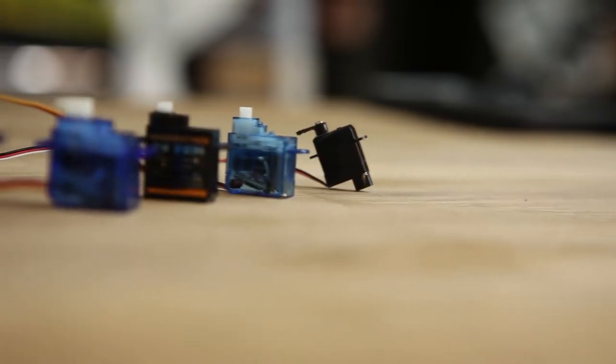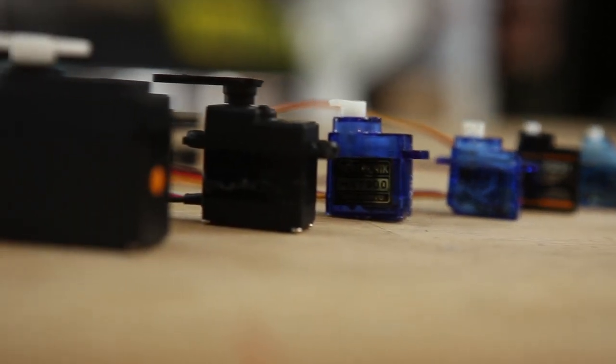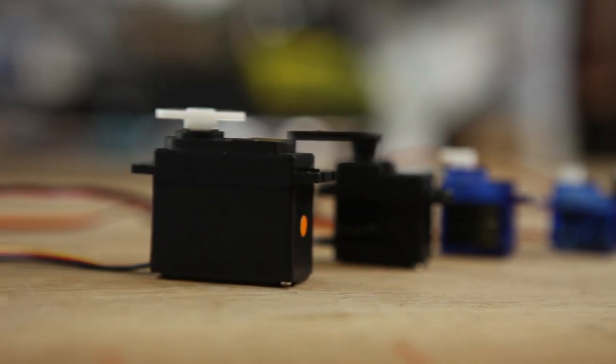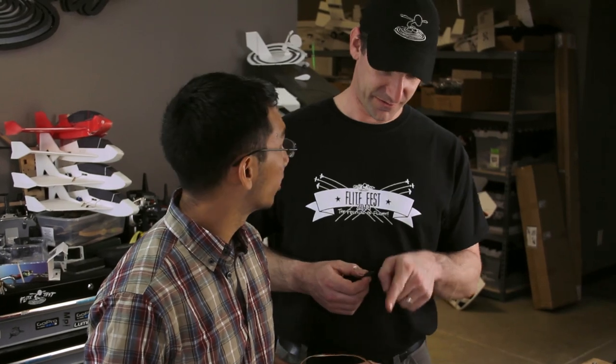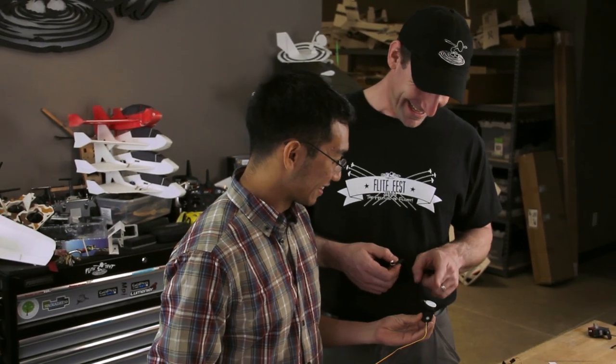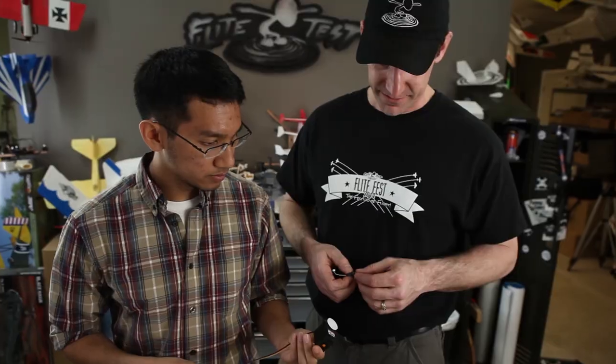First of all, since we have a fairly broad topic today, we're going to cover sizes. A long time ago, the first thing was the standard size servo. Those look like the ones I used to fly. This is from the mid-80s. That was a typical servo back then.